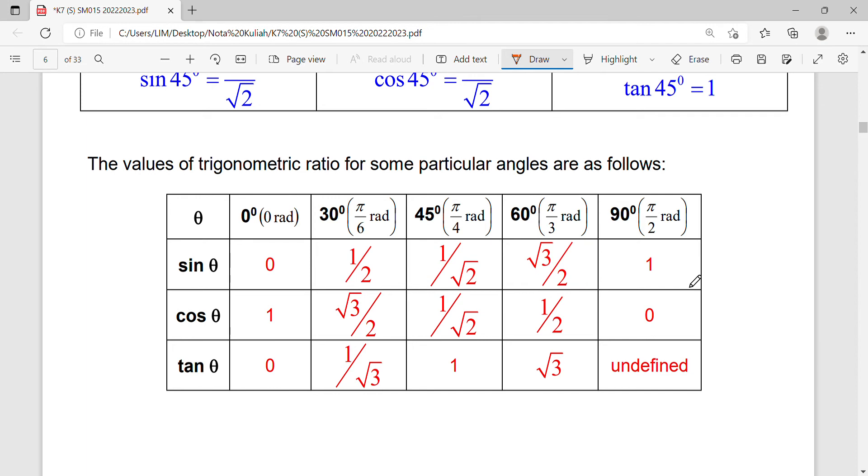But what we need to concern here is you must know that the special angles are 30 degrees, 45 degrees, and 60 degrees. These three special angles will come up in STPM.